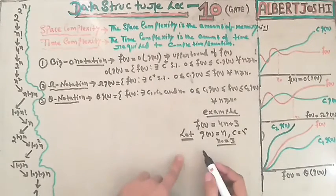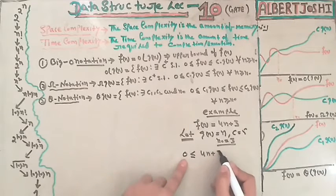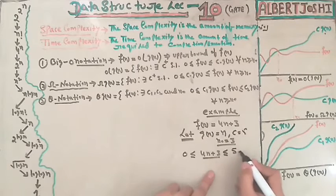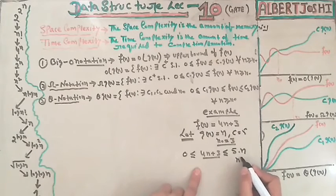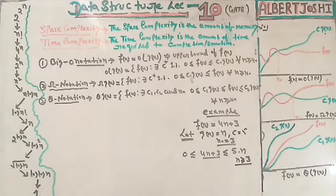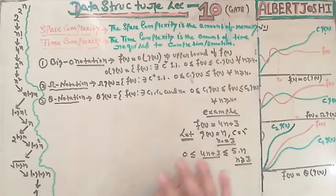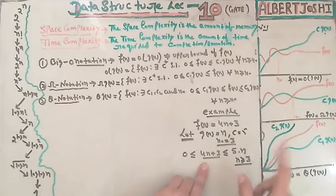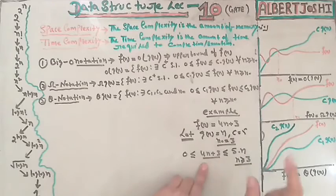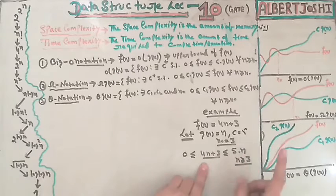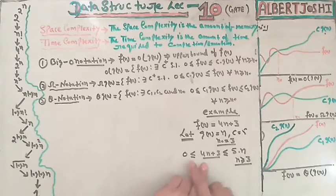For n = 3: 5 * 3 = 15 and 4 * 3 + 3 = 15. So 15 ≤ 15 — correct. For n = 5: 5 * 5 = 25 and 4 * 5 + 3 = 23. So 23 ≤ 25 — correct. For n = 10: 5 * 10 = 50 and 4 * 10 + 3 = 43. So 43 ≤ 50 — correct.